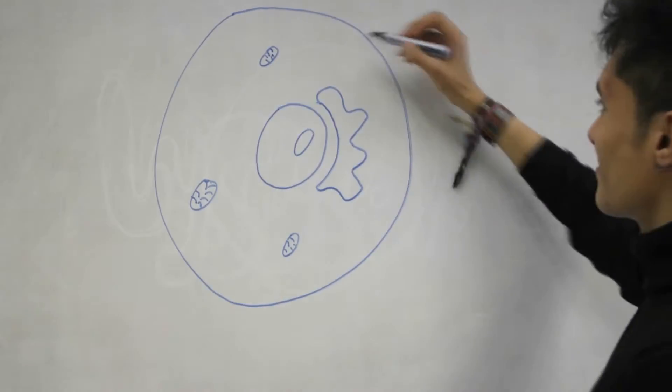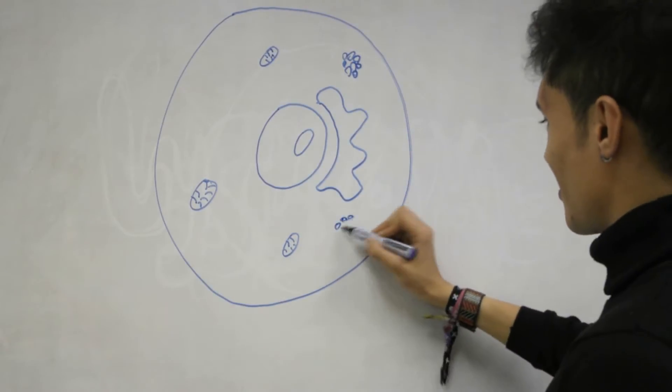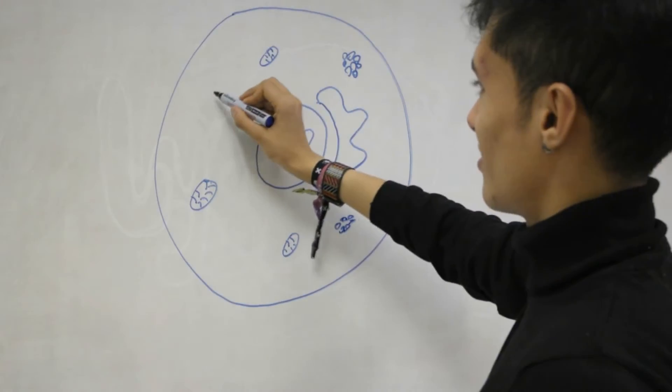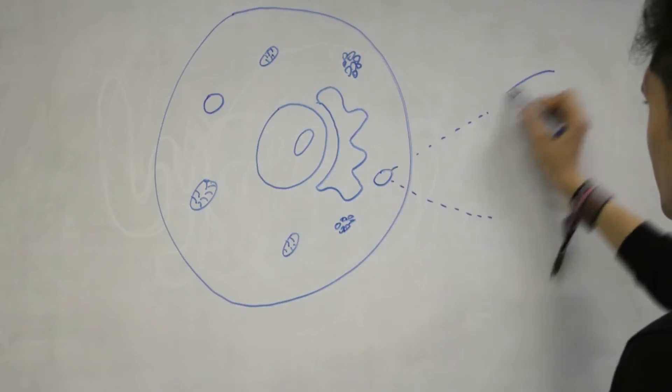The lysosome is basically a specialized vesicle that holds a variety of enzymes. The enzyme proteins are first created in the rough endoplasmic reticulum. These proteins are packaged in a vesicle and sent to the Golgi apparatus.